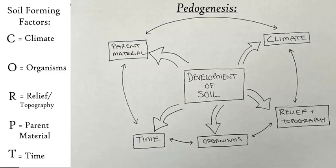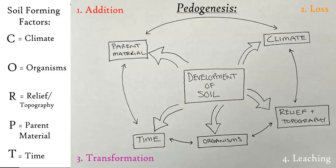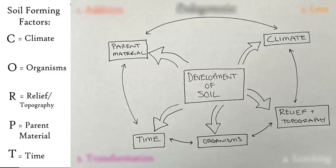This video focuses on how soil is developed, produced, and formed. There are four main methods of formation: addition, loss, transformation, and leaching. These four methods create the soil, but soil is also dictated by different controlling factors — climate, organisms, relief or topography, parent material, and time — and we'll go through each one in detail.